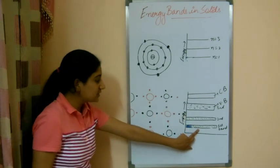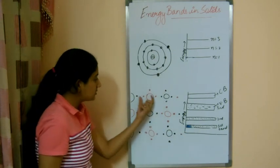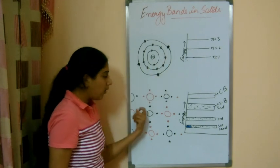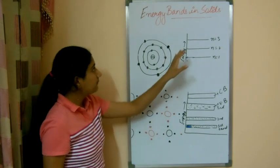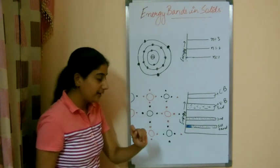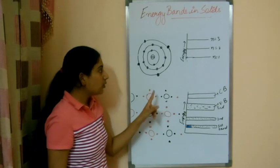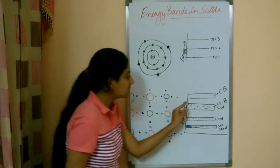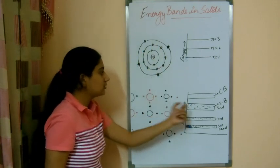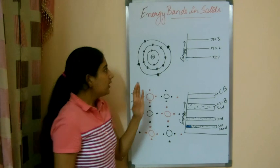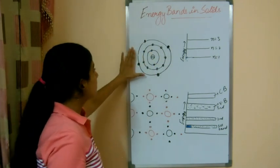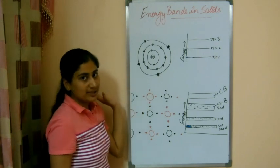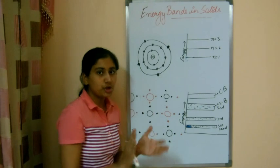The first band of silicon accommodates 2 electrons from each atom, and this forms the first band. Moving to the second orbit of all atoms in solid silicon forms the second band. The third band accommodates the valence electrons and is called the valence band. This valence energy level is not fully filled in an isolated atom because silicon has only 4 valence electrons, but 8 are needed — so the valence band should not be fully filled.